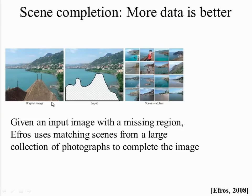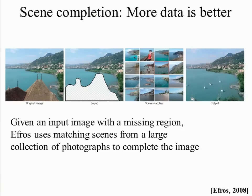Alyosha Efros at CMU has a cute example where he takes an image, cuts out something he doesn't like from his holiday photo, then searches a huge database of similar images that match at a semantic level — picking pixels from these images to reconstruct the rest of the scene. He gets something very plausible. But this is only possible when the database includes millions or possibly billions of other images. With just a few, it doesn't work.